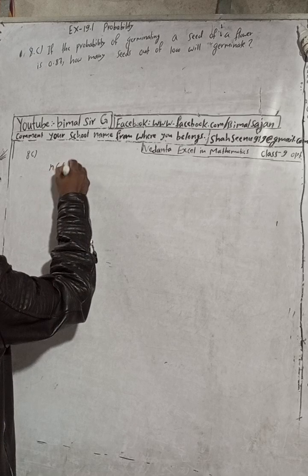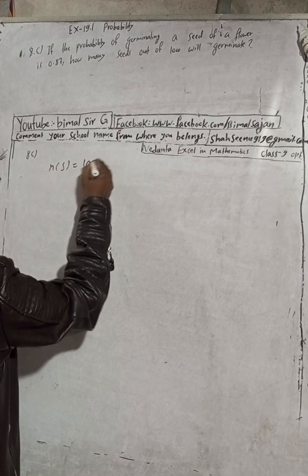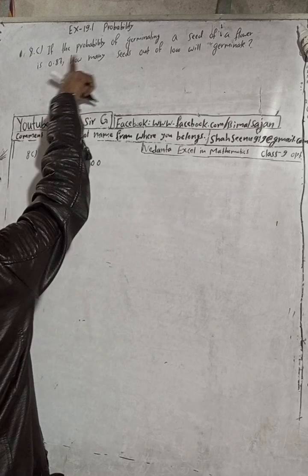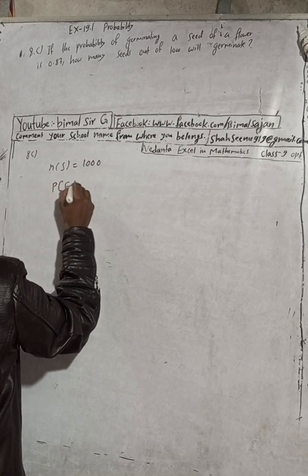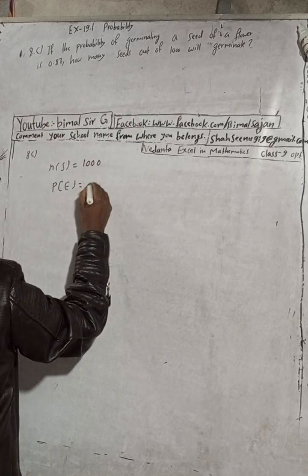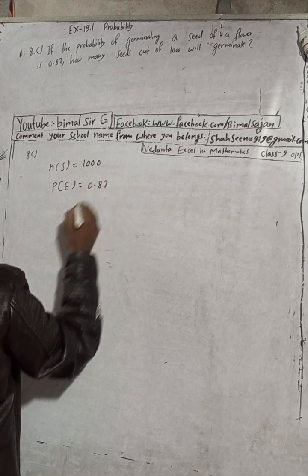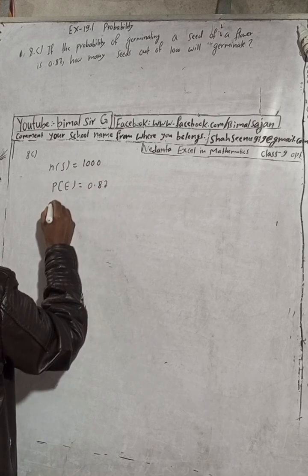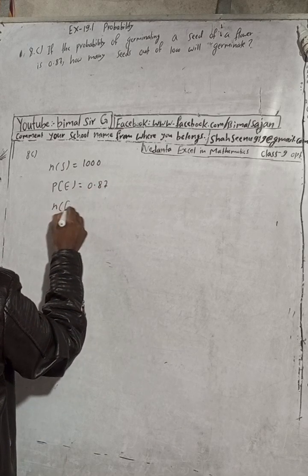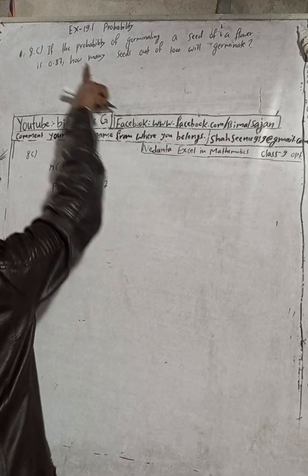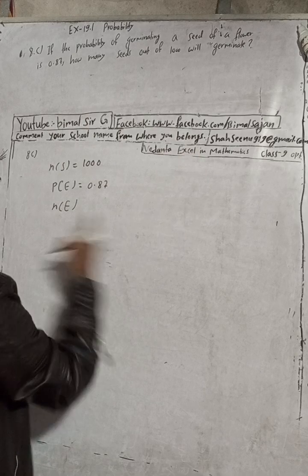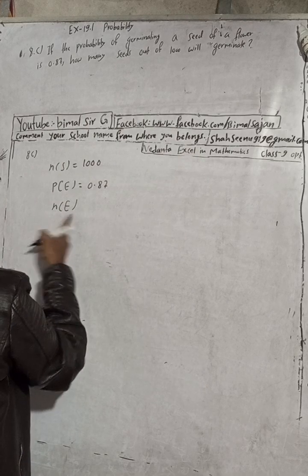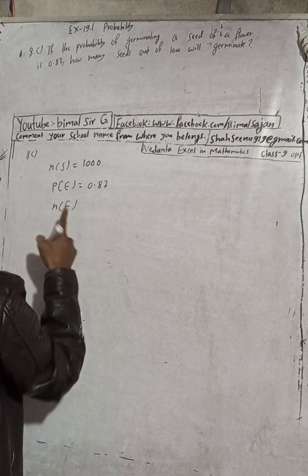So n(S) is here thousand, one thousand, and the probability of germinating a seed, P(E), is given here 0.87. So obviously we have to find what n(E). How many seeds means how many favorable cases. How many seeds out of this, so we have to find number of that.